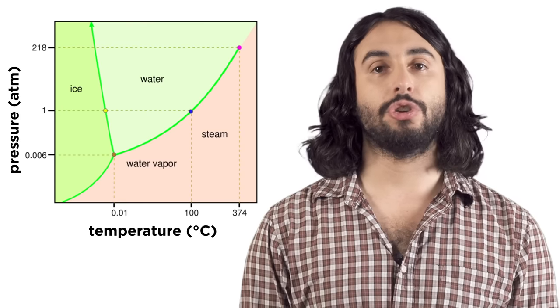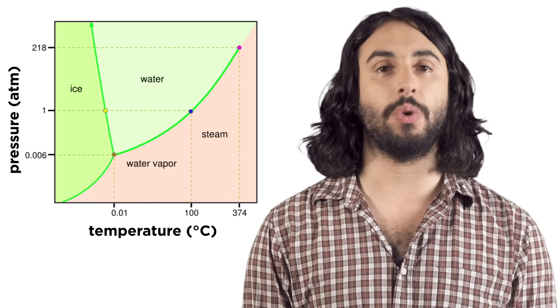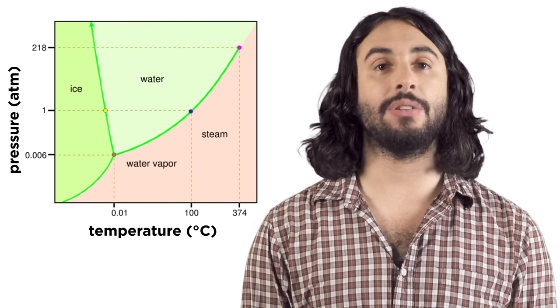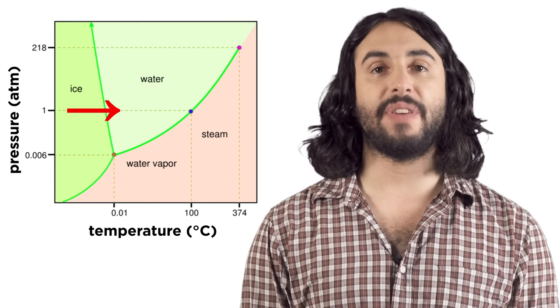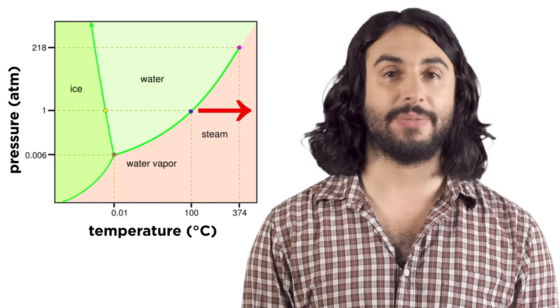Phase diagrams show what phase a substance will be in at a particular temperature and pressure. For water, we can see the phases we would expect at atmospheric pressure.